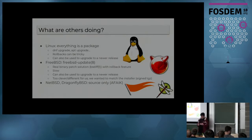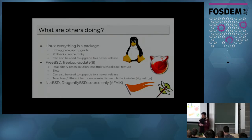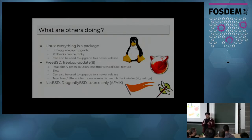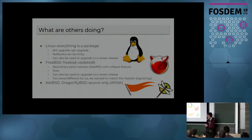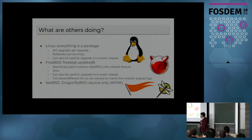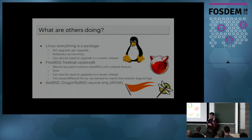Before coming up with Syspatch, we looked at what others were doing. In Linux, most of the time everything is a package, so you just run DNF upgrade or apt-get upgrade or whatever. Our intent was completely different — we don't want to be a release upgrade tool, we want to be a maintenance tool. Also, sometimes rollbacks are tricky when everything is a package. We looked at FreeBSD — to be honest, we've been jealous about freebsd-update for quite a long time. We looked into implementing it, but it was quite complicated — much too clever, and also very slow. It's also a tool that allows you to upgrade to a newer release, which is something we didn't want. Regarding NetBSD and DragonFly, as far as I know, it's source only.